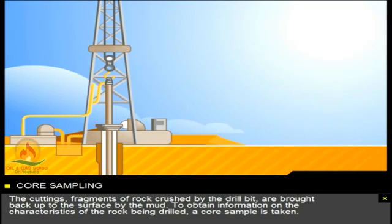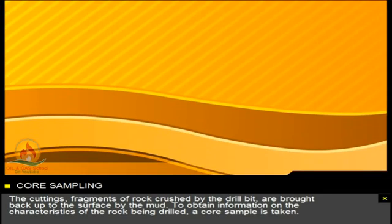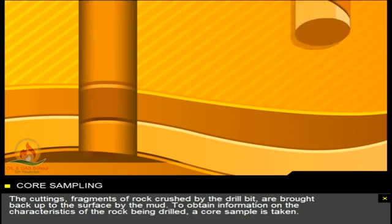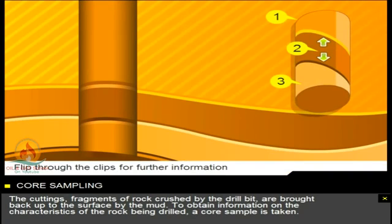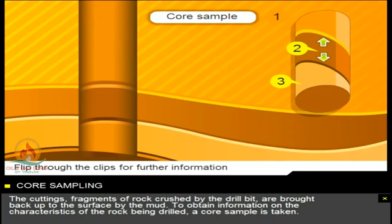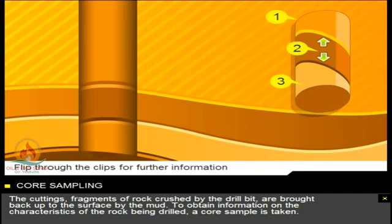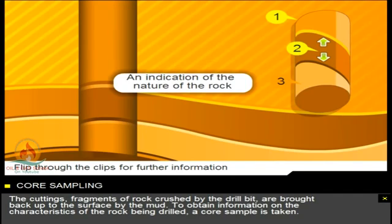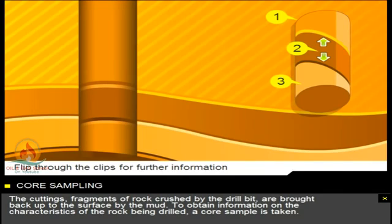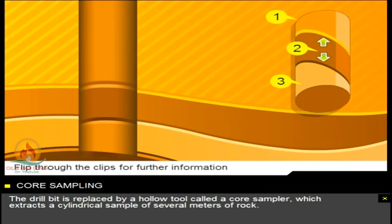The cuttings, fragments of rock crushed by the drill bit, are brought back up to the surface by the mud. To obtain information on the characteristics of the rock being drilled, a core sample is taken. The drill bit is replaced by a hollow tool called a core sampler, which extracts a cylindrical sample of several meters of rock.